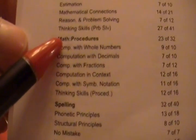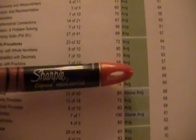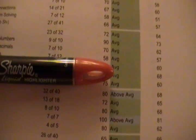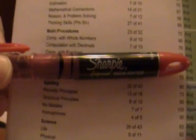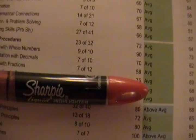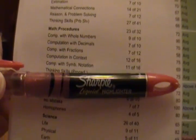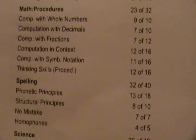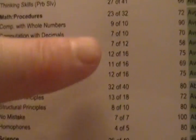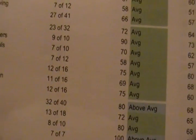So here we are, math procedures. We have 23 out of 32. Now let's look at this again. Remember there's only 32 problems. If you add up those three - computation with whole numbers, computation with decimals, and computation with fractions - that equals 32: 10 and 10 and 12 is 32. All these others, computation with symbolic notation, thinking skills, and computation in context, those are actually embedded questions. They're not separate questions because if you added all those up, that's way more than 32. So those are the only things that were actually questions, those three sections.